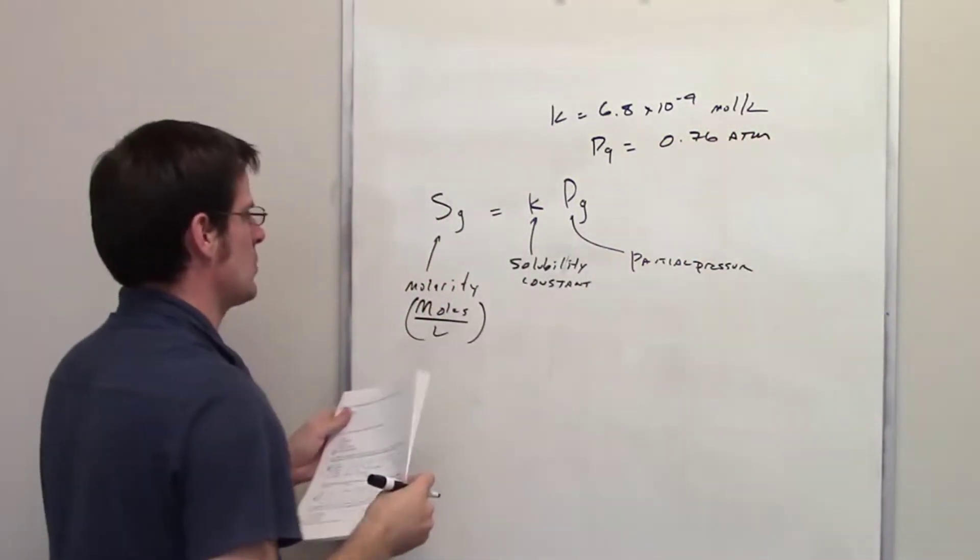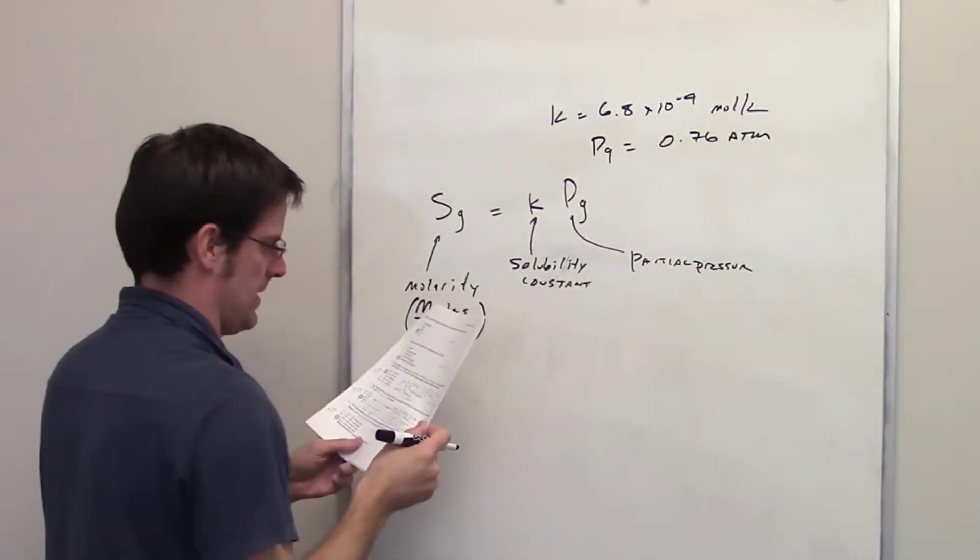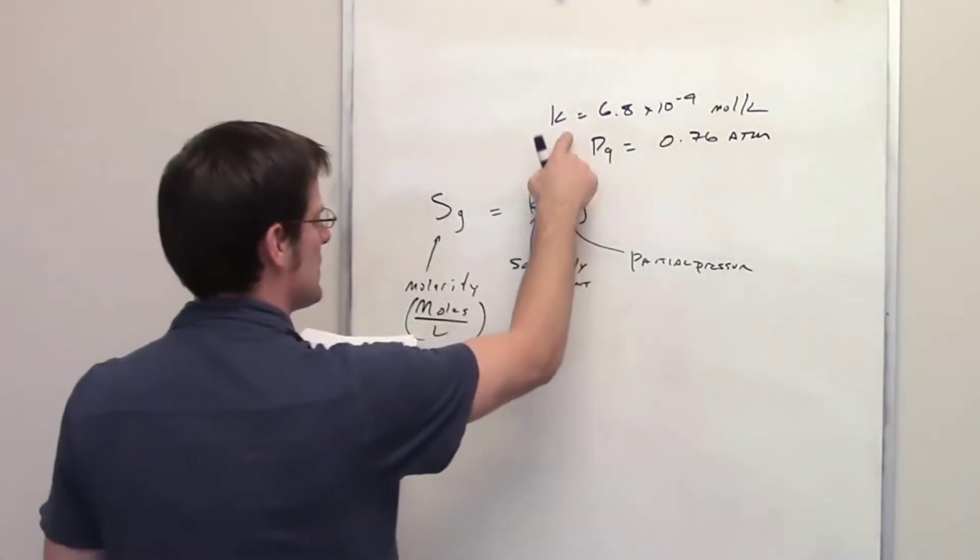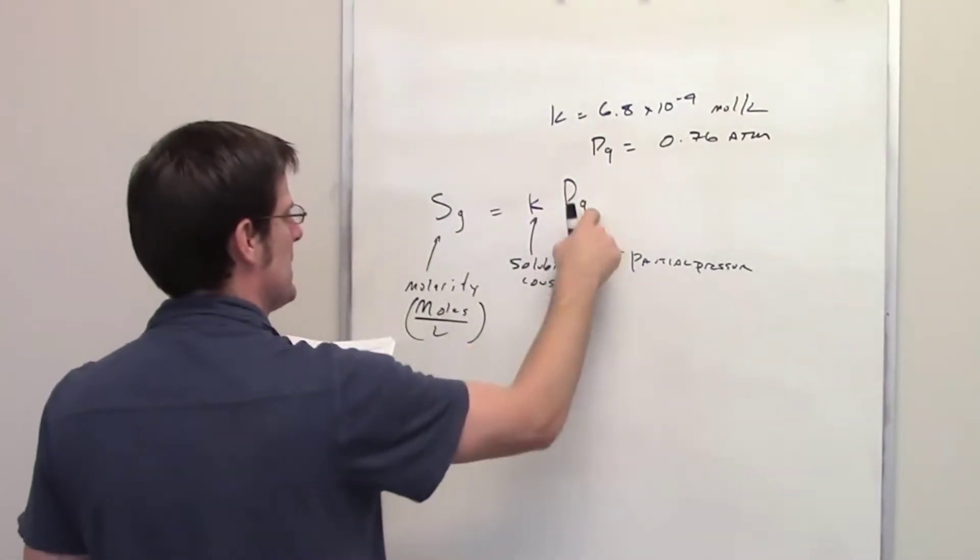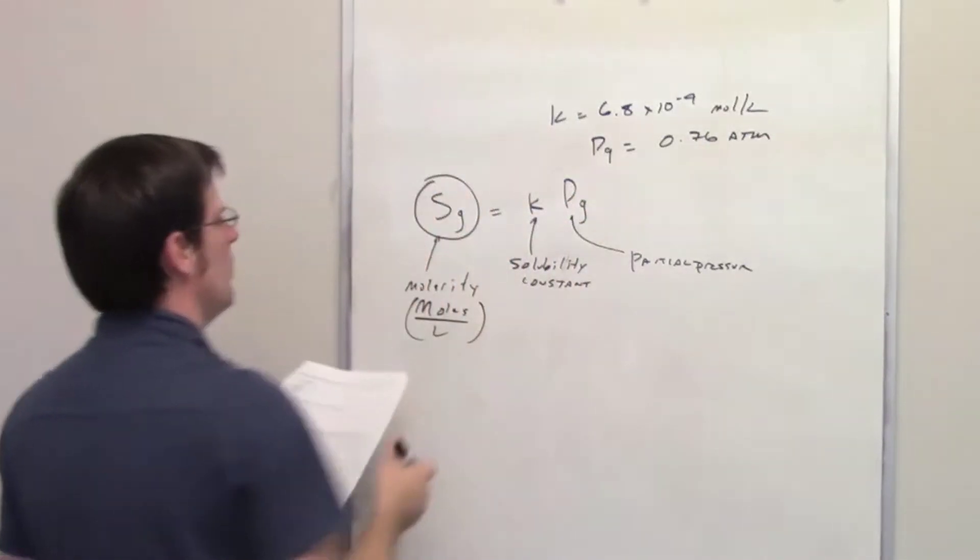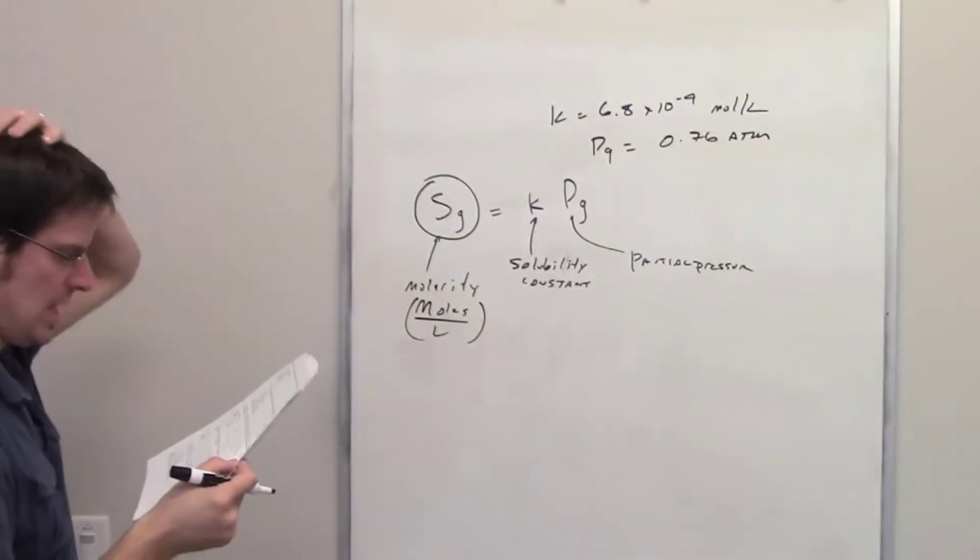It then asks what is the concentration. So in other words, it gives us k, gives us p sub g, and asks us to solve for the concentration, that is the molarity.